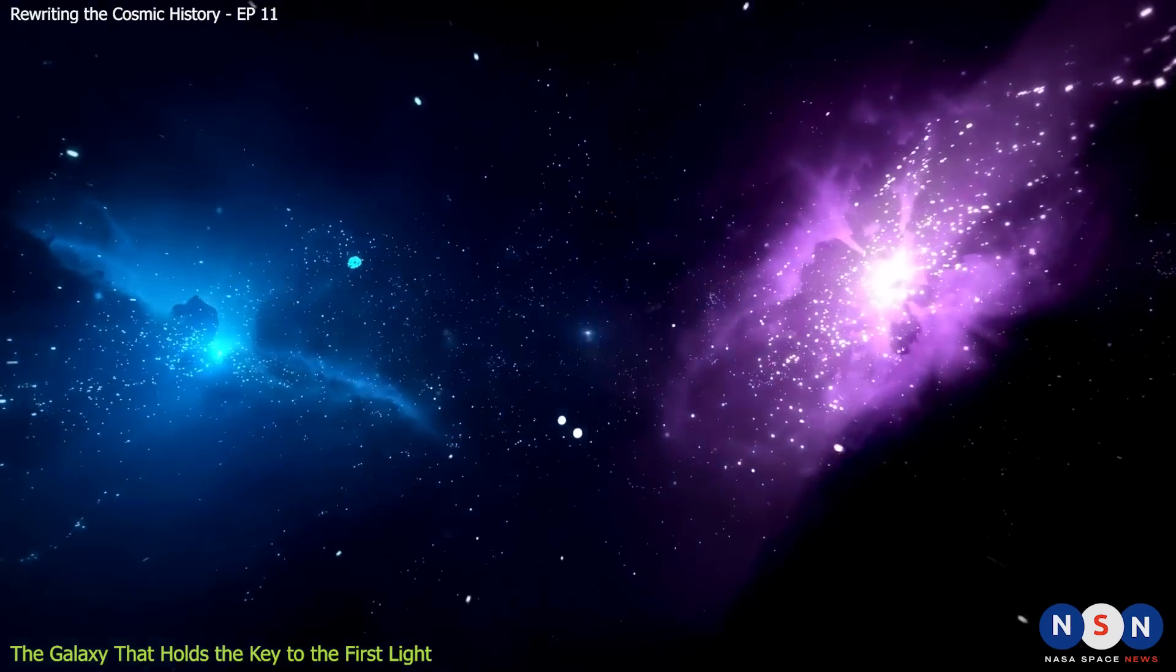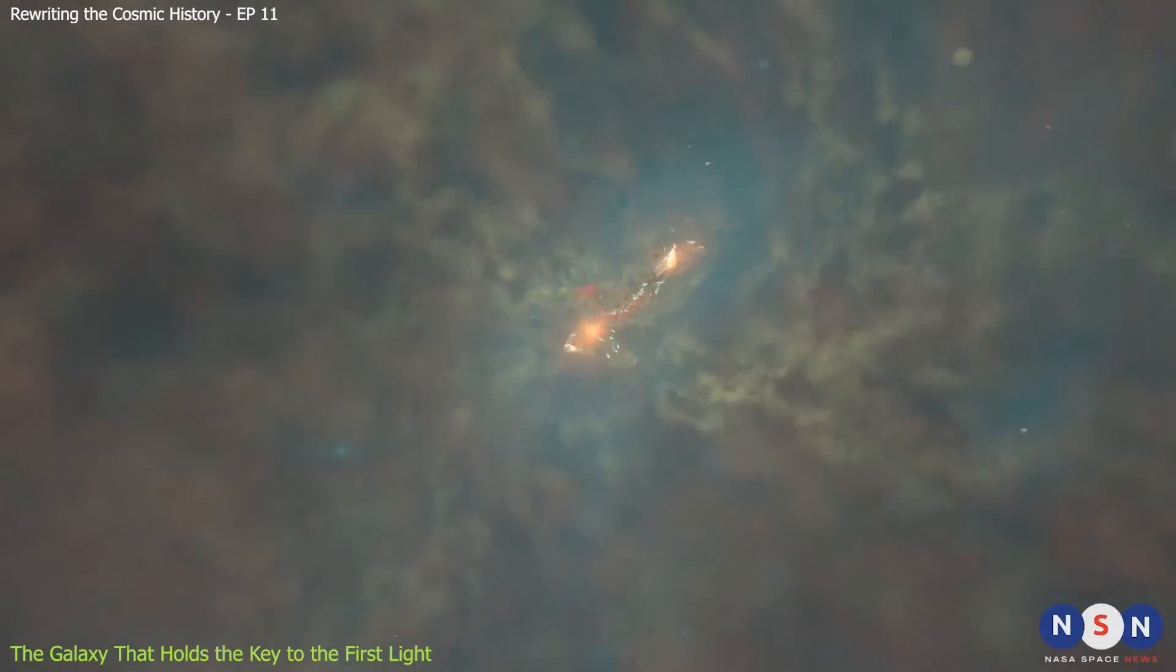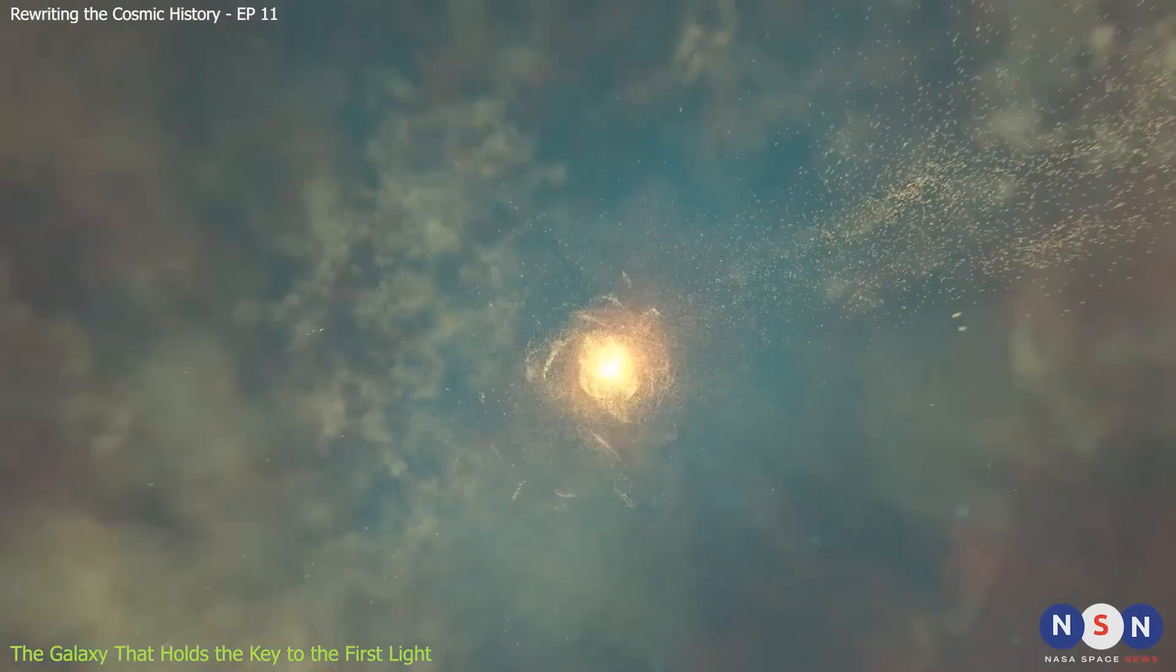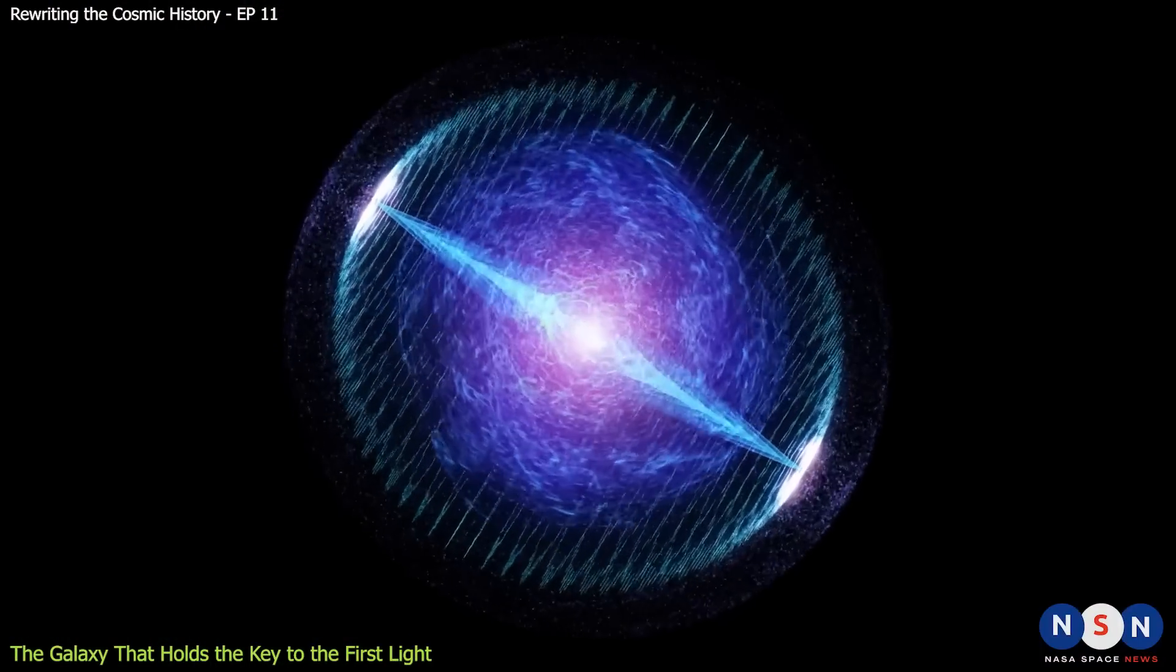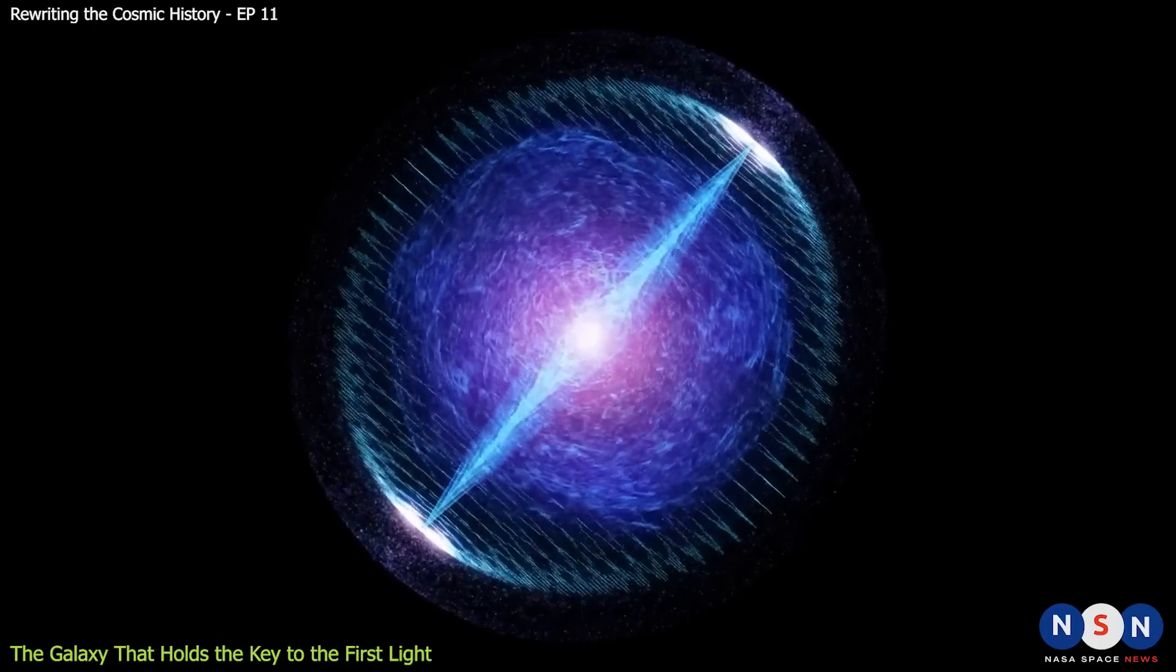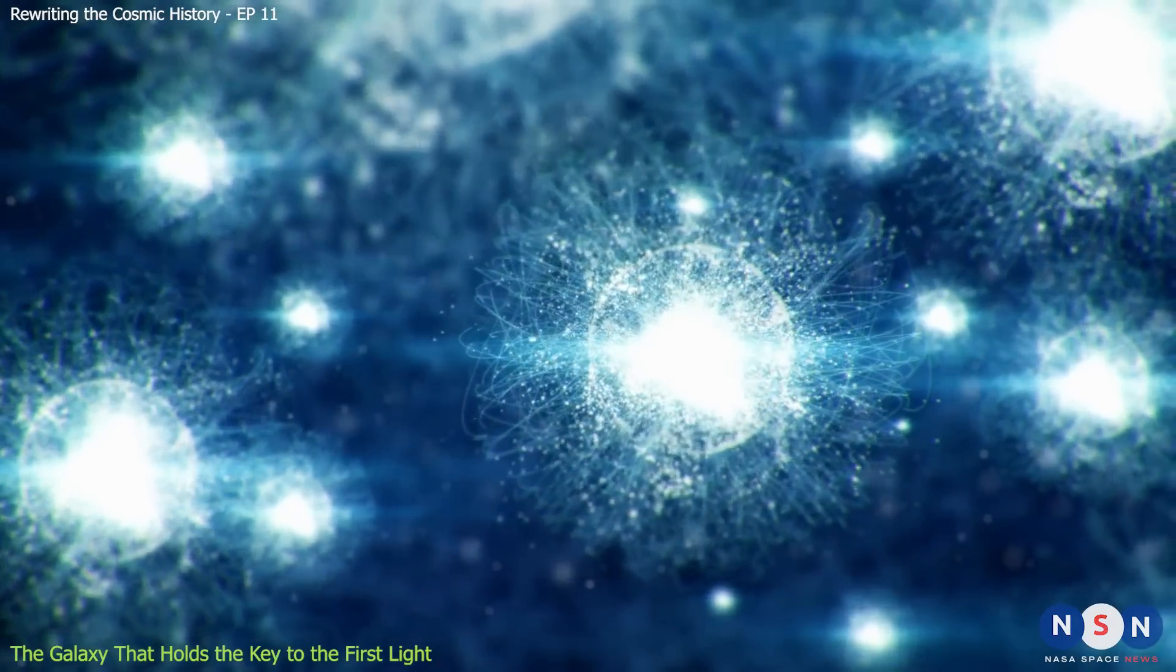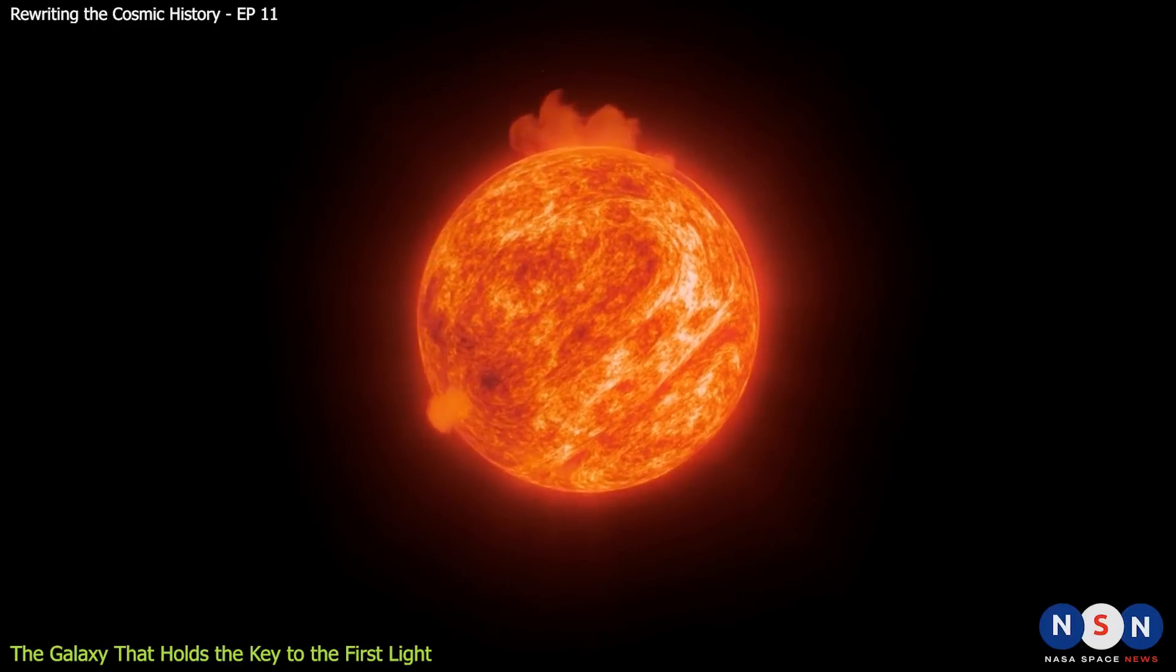How did this galaxy form so early in the universe? The most likely scenario is that it was the result of a merger of several smaller galaxies that formed in the same dark matter halo. These smaller galaxies were probably the first sites of Pop 3 star formation, and they triggered a chain reaction of star formation in the larger galaxy. As more stars formed, they also produced more metals, which gradually changed the composition of the gas and the nature of the stars. This is how Pop 3 stars gave way to Pop 2 stars, which are older stars with low metallicity, and then to Pop 1 stars, which are younger stars with high metallicity.